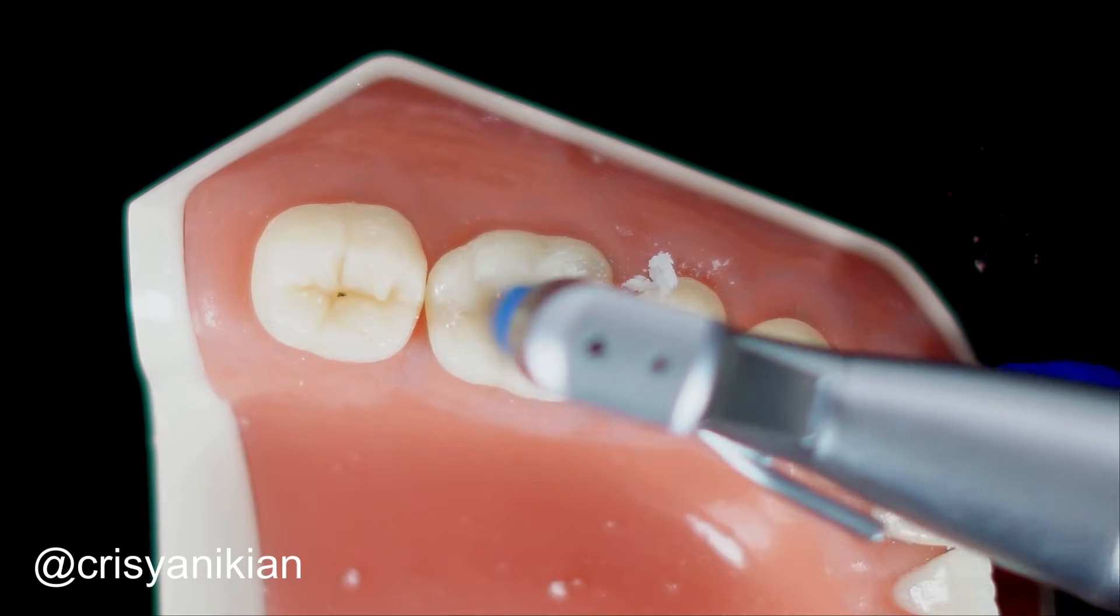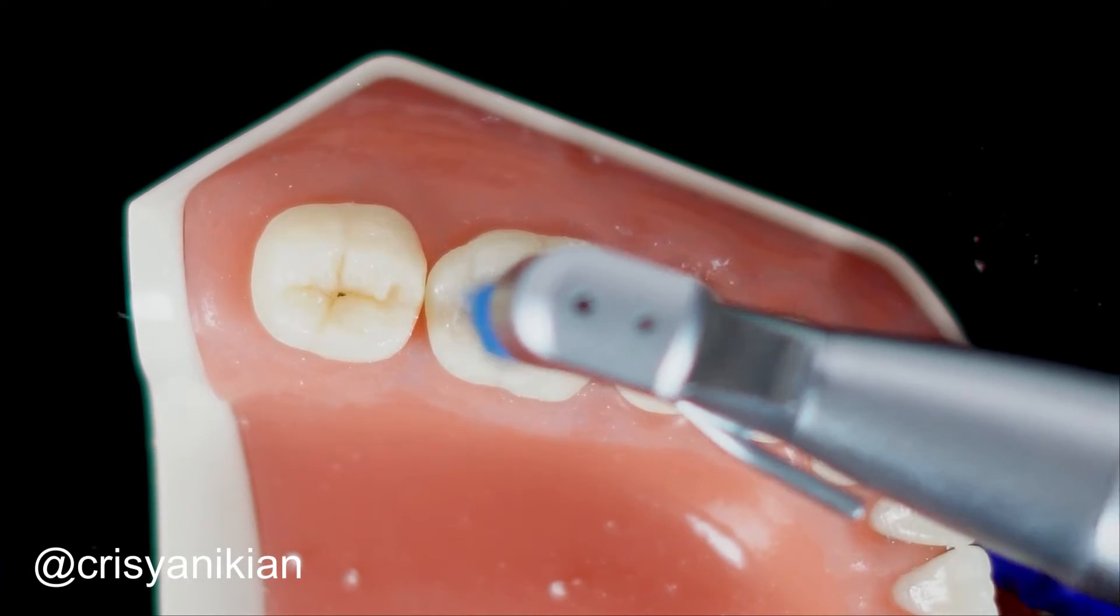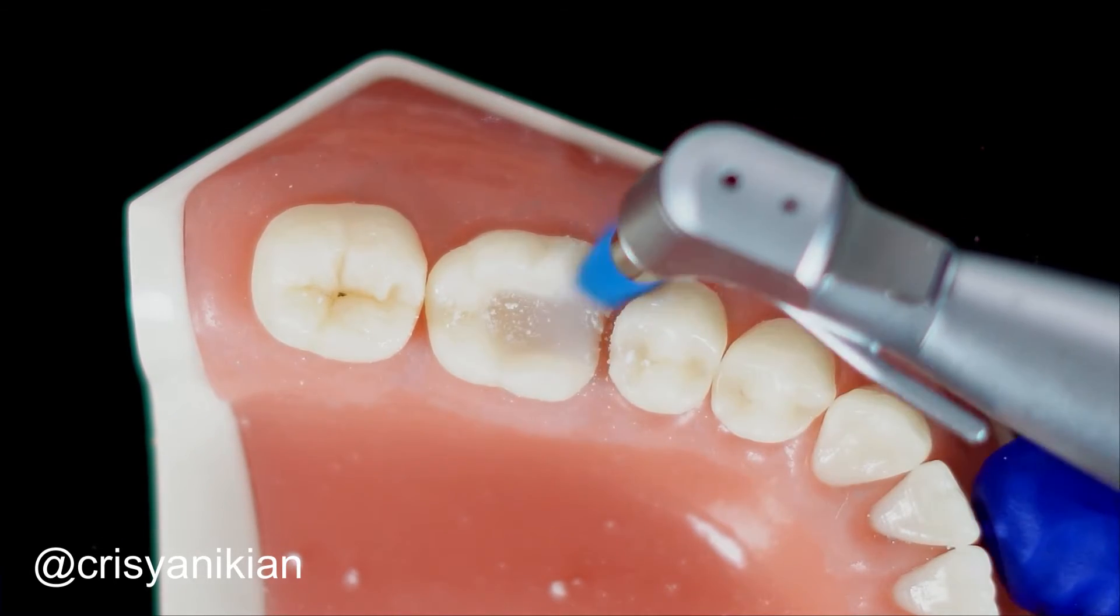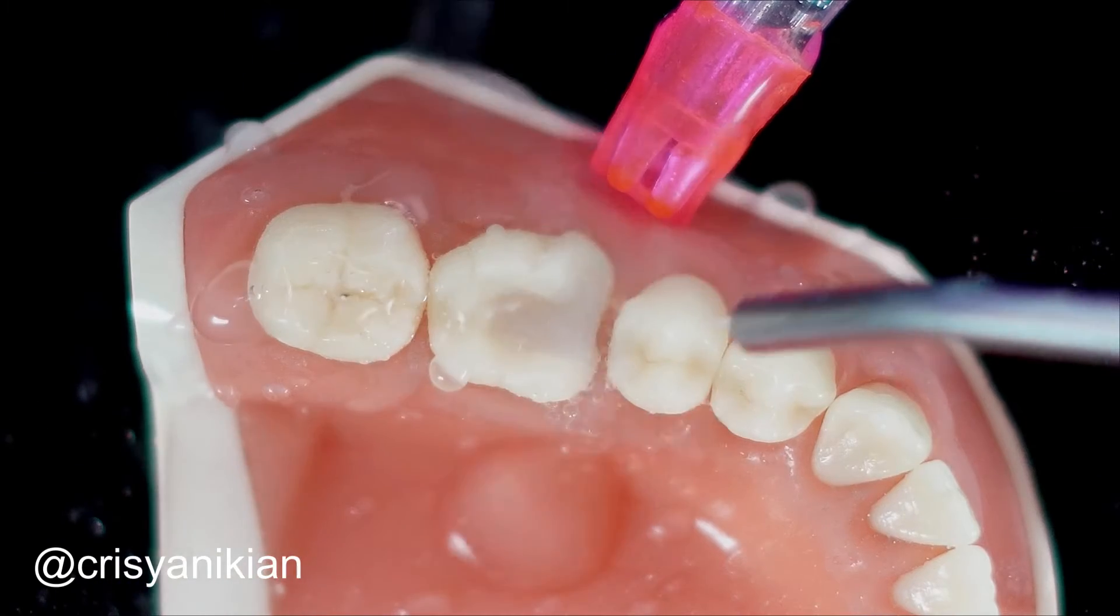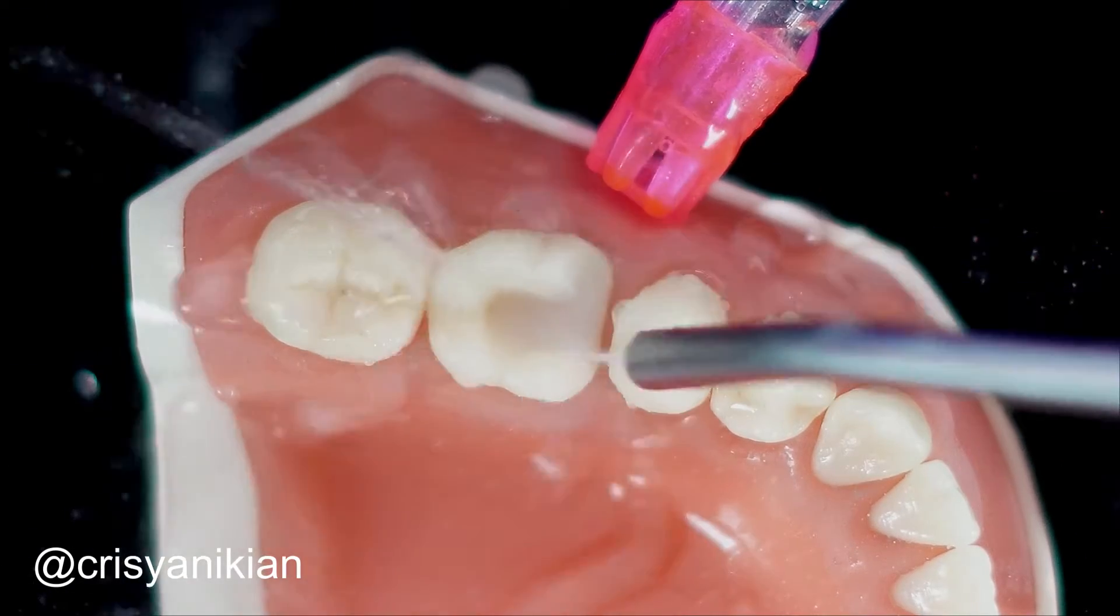Perform tooth prophylaxis using a Robinson brush and pumice paste to remove temporary restoration residues. Avoid using aluminum oxide jet at this stage since the patient will be without absolute isolation.